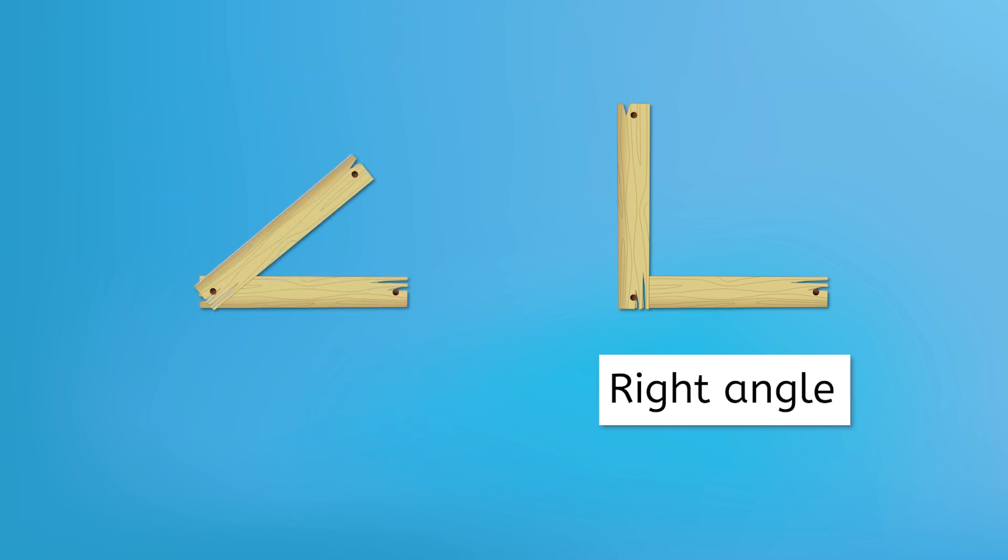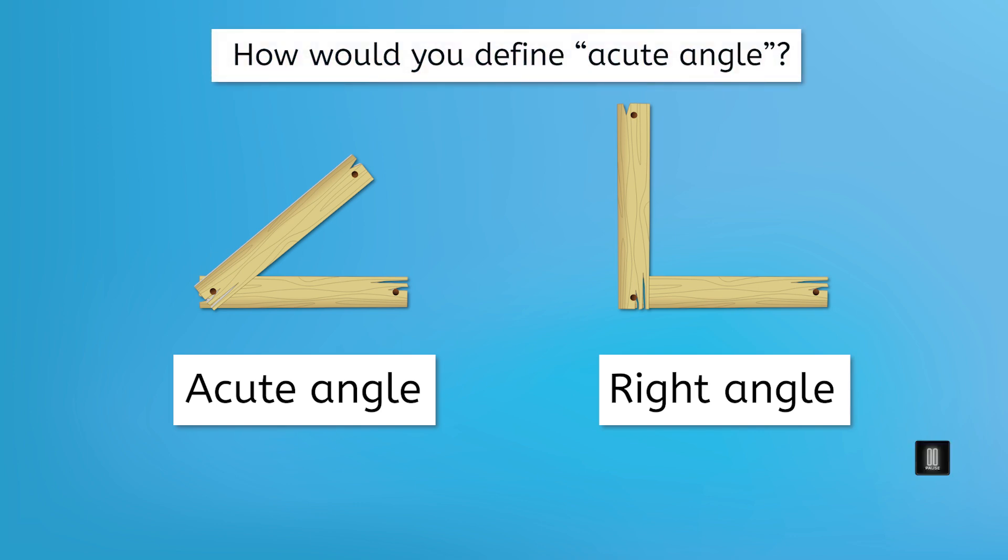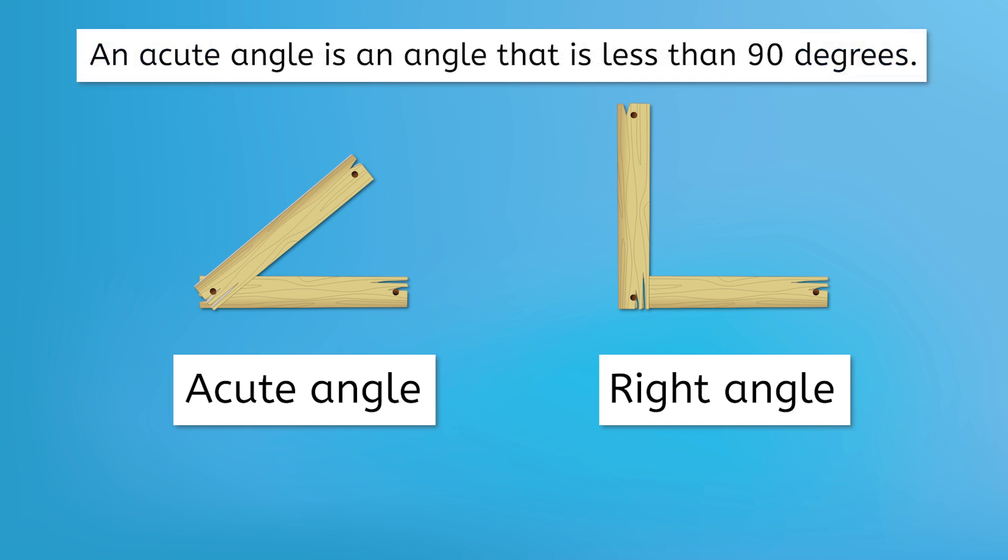Take a look at this other angle we found in the pile. It's called an acute angle. Comparing it to the right angle and using the corner of our paper, how would you define acute angle? Don't forget to write down your idea in your guided notes. Yep, since the acute angle is less open than the right angle, and our paper covers it up entirely, that means it's smaller than the right angle. The definition of an acute angle is an angle that is less than 90 degrees.